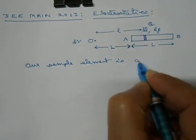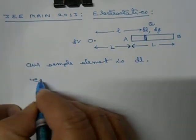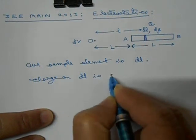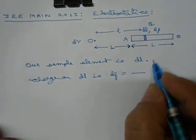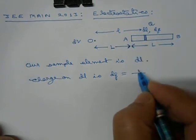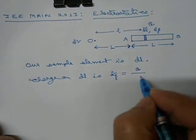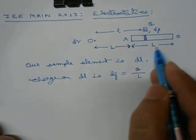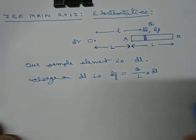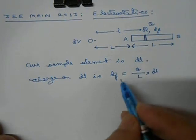Our sample element is of length DL. The charge on DL, which we call DQ, is charge per unit length multiplied by the length of the element. The charge per unit length of the rod is Q divided by L, so DQ equals (Q/L)·DL.